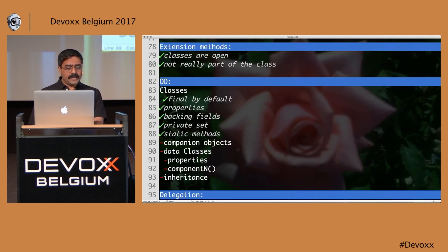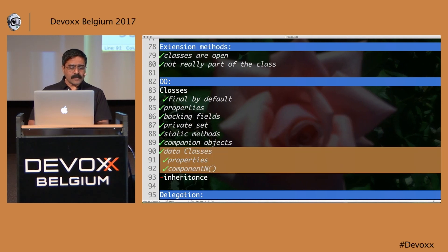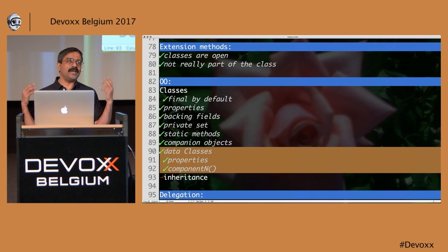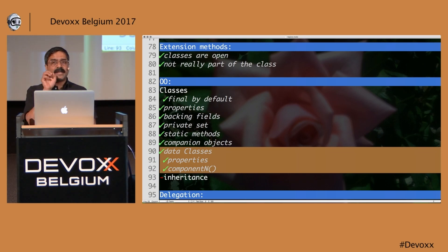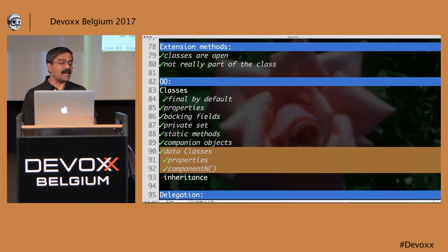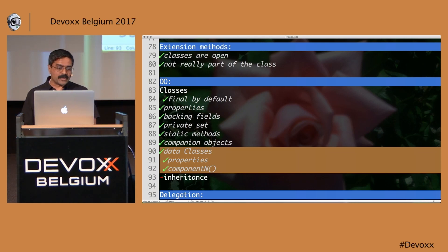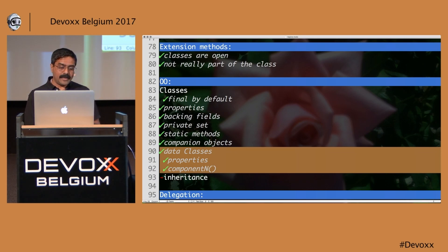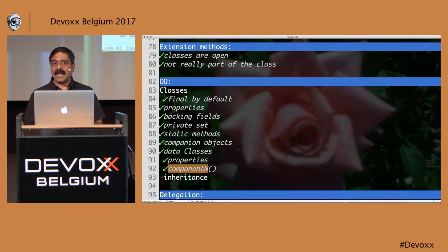If you want to use your object as a data object — just passing data around, not much behavior — you can say 'data class'. That becomes an immutable class. You can make a copy of it, and it provides a few free methods like toString. You can also access properties directly or using componentN.